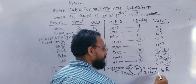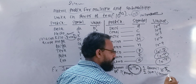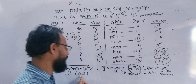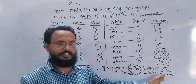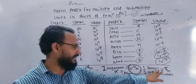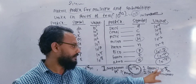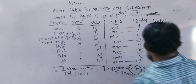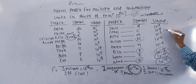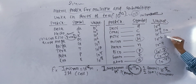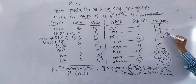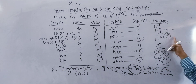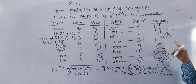One Fermi is 10 to the minus 15 meter. The nucleus is 10 to the minus 15 meter. After 0.000 — that's how my physics is, so we have to research the physics.